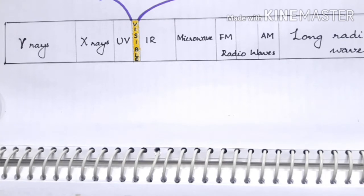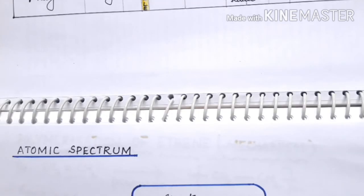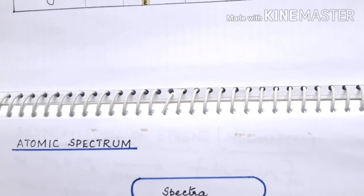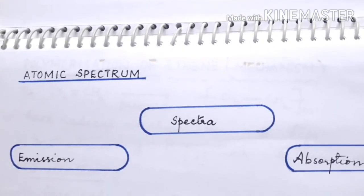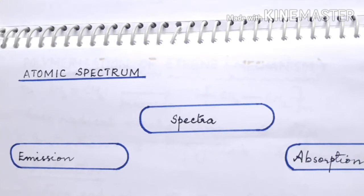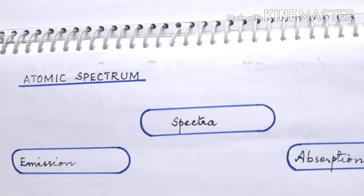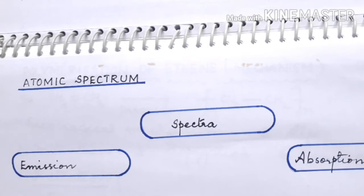Unlike solar radiations or electromagnetic radiations, if you check the spectrum of atoms they are always discontinuous. You find that the atoms will produce what is called a line spectrum or band spectrum. There are two types of atomic spectra produced: it can be either emission spectra or absorption spectra, and we learn the different types in this video.